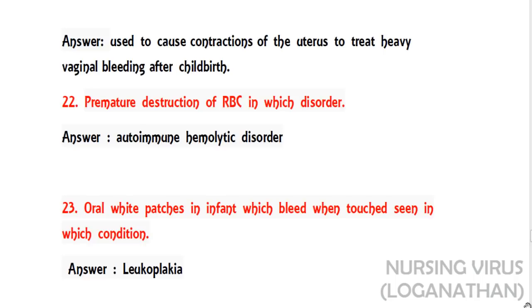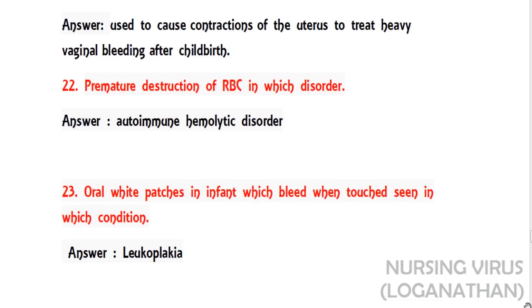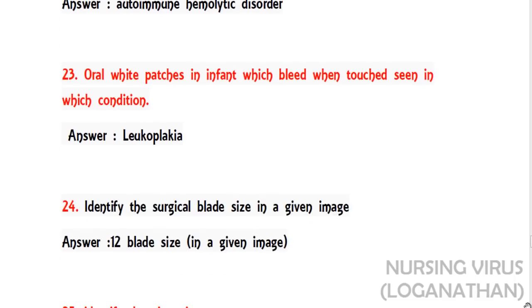The twenty-second question: premature destruction of RBCs occurs in which disorder? This commonly happens in autoimmune hemolytic disorder — that is hemolysis. The twenty-third question: oral white patches in infants that bleed when touched are seen in which condition? The answer is leukoplakia.